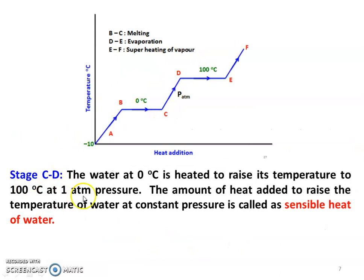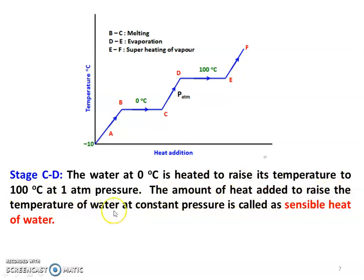Stage C to D: C is water at 0 degrees Celsius and D is water at 100 degrees Celsius. The water at 0 degrees Celsius is heated to raise its temperature to 100 degrees Celsius at 1 atmospheric pressure. The amount of heat added to raise the temperature of water at constant pressure is called the sensible heat of water.